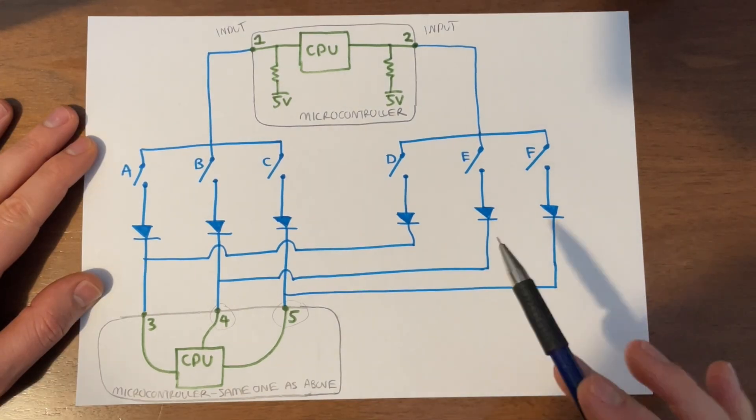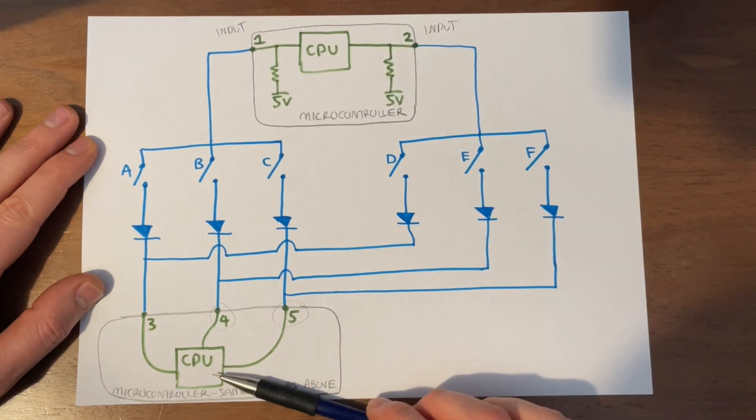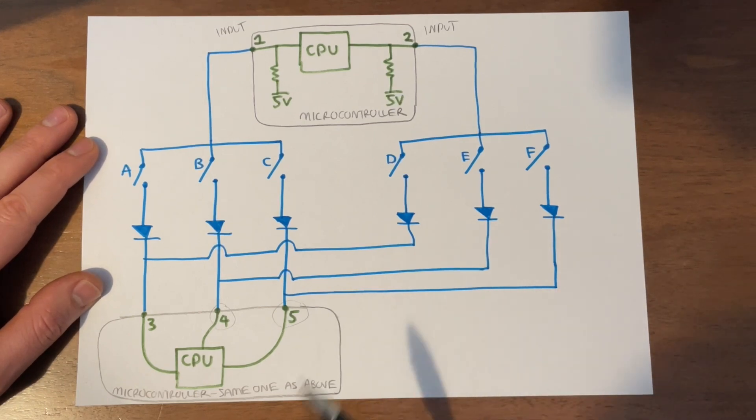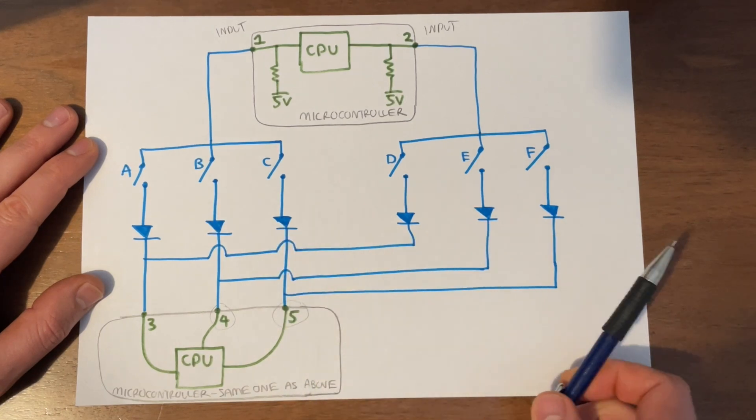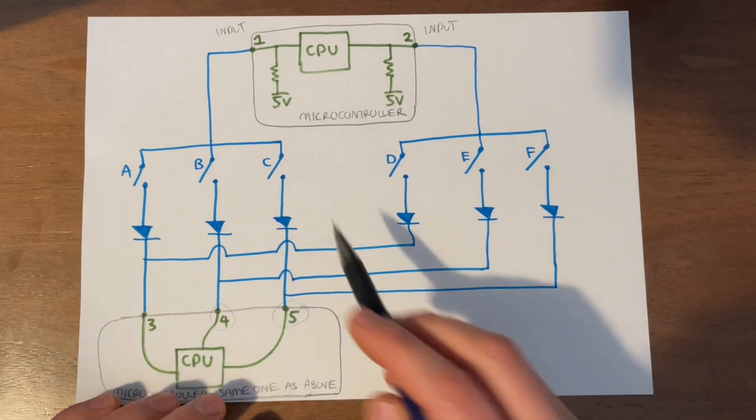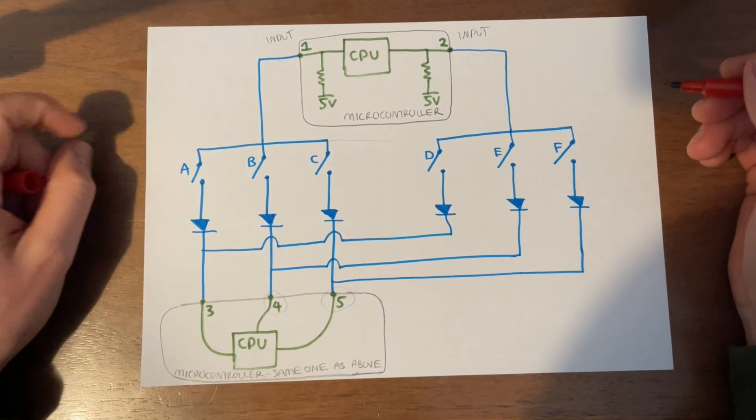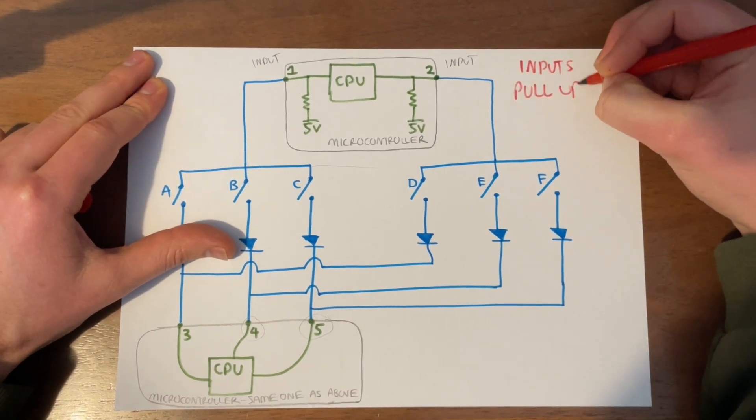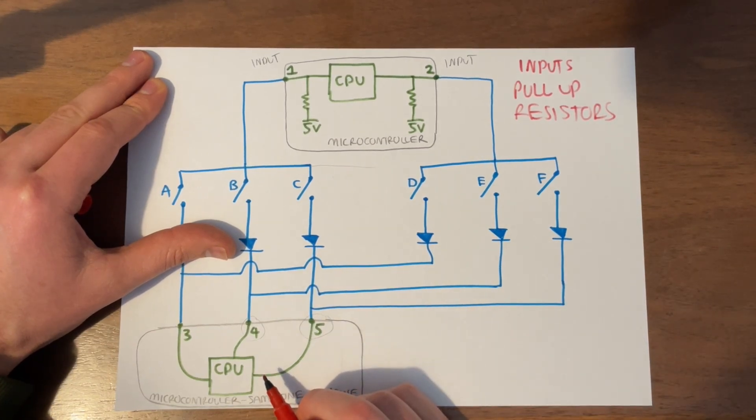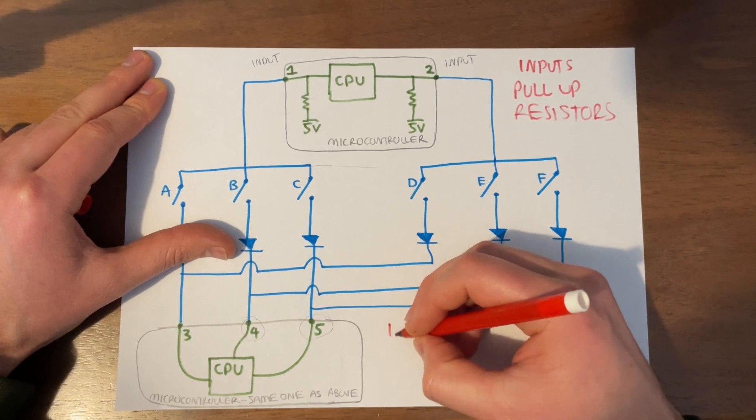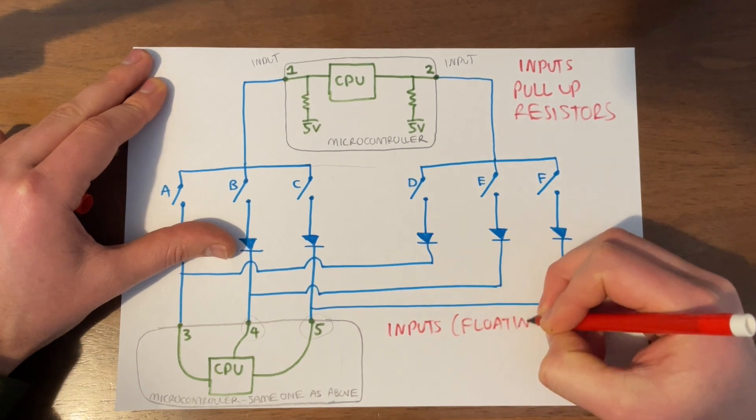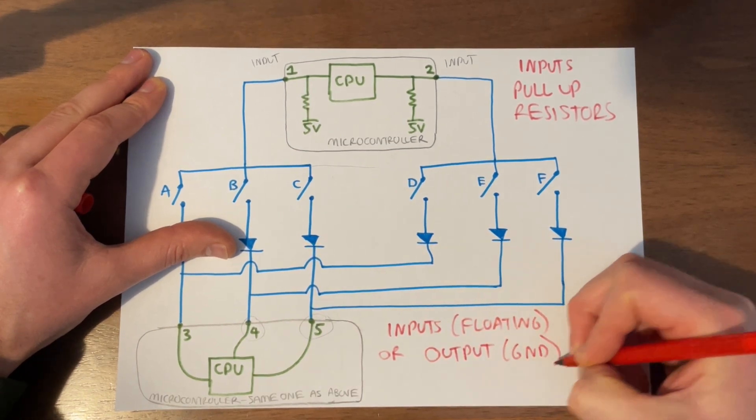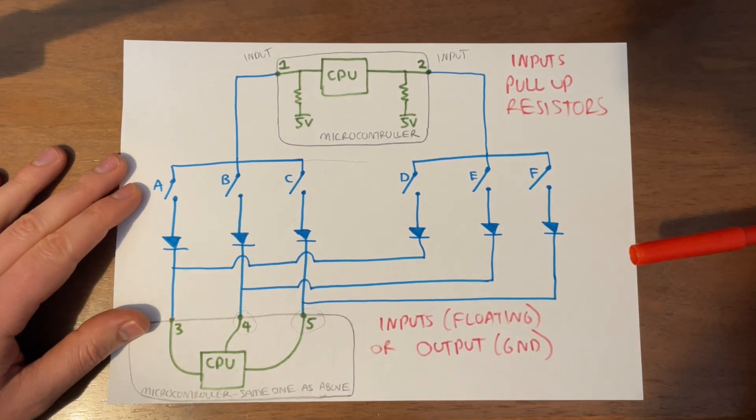It's important to note that this is just a schematic, and so I've shown two microcontrollers here, but there's really just one microcontroller. And there's pin 1, pin 2, pin 3, pin 4, pin 5 of the same microcontroller. Another thing to note is, this is just showing like two rows and three columns, but as we talked about in our last video, in reality, we'll have many more rows and many more columns. So when it comes to programming the microcontroller, we're going to be setting these as inputs with pull-up resistors. These here are going to be set as either inputs, floating, or output set to ground. So these are the different states that we're going to be defining in the programming of the microcontroller.